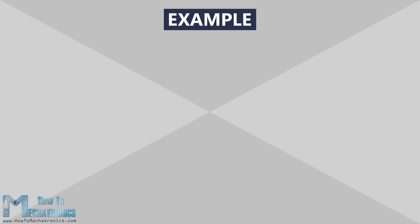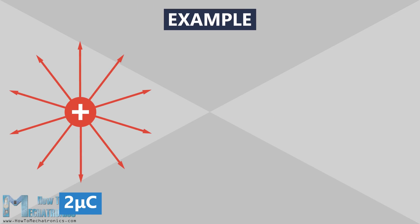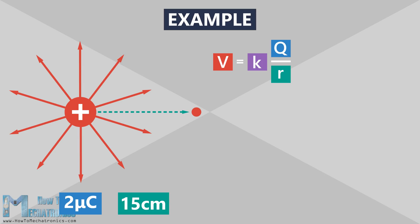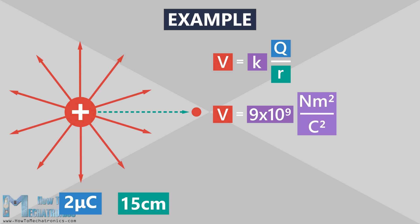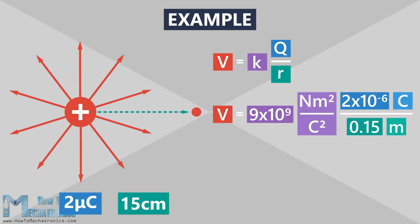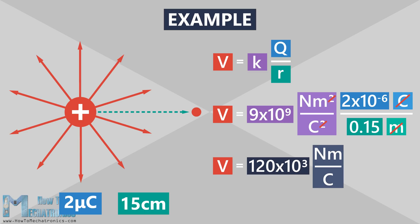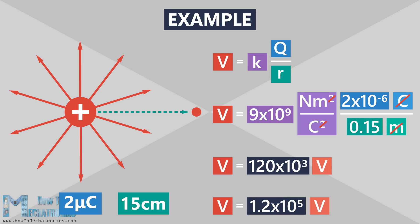Here's an example. There's a point charge equal to plus 2 microcoulombs, and we want to find the electric potential 15 centimeters away from the charge. Using the equation, the potential is equal to 9 times 10 to the 9th, multiplied by the charge in Coulombs, and divided by the distance 0.15 meters. We can cancel out Coulombs and meters, and we are left with Nm per Coulomb. Nm is the same as Joules, which leads us to Joules per Coulomb, or volts, so the result is going to be 1.2 times 10 to the 5th volts. We got a positive electric potential.